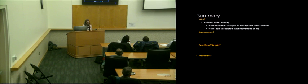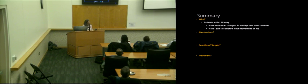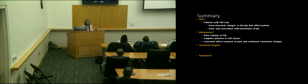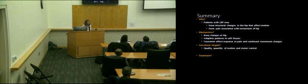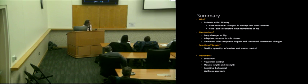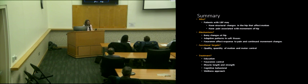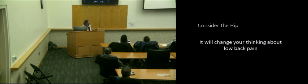In summary: patients with low back pain may have structural disorders in the hip that affect motion, and we need to be aware of that. They may also have pain associated with hip movement that may not all be intra-articular. Mechanisms can be bony changes, adaptive patterns, or neuromuscular effects of poor control. Functional targets are always quality and quantity of motion and motor control. Treatments include education, neuromuscular control, muscle length and strength, and cognitive behavioral aspects. We should be adding this wellness approach to our armamentarium. Consider the hip — it will change your thinking about low back pain.